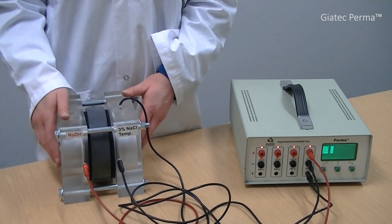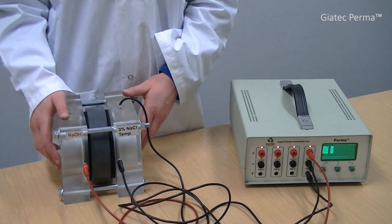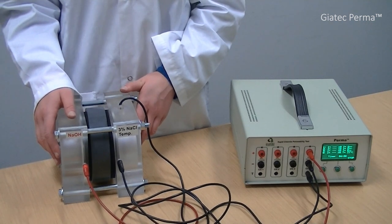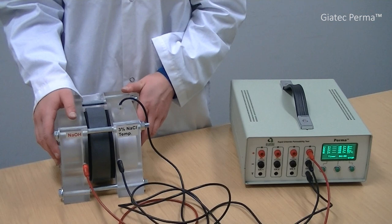If you need to change the test parameters, press the menu key to modify the parameters in the main menu of the system. For more information in this regard, please see the device setup section of the PERMA user manual.